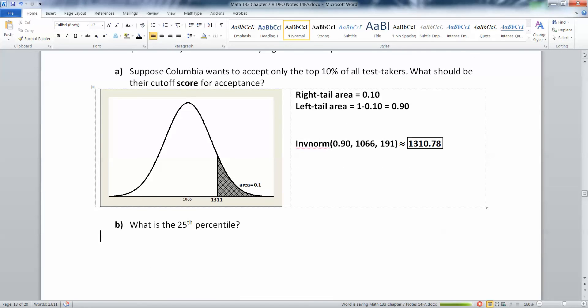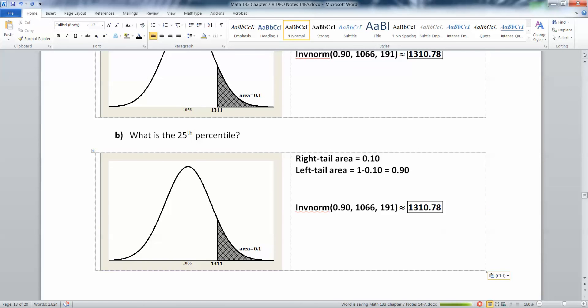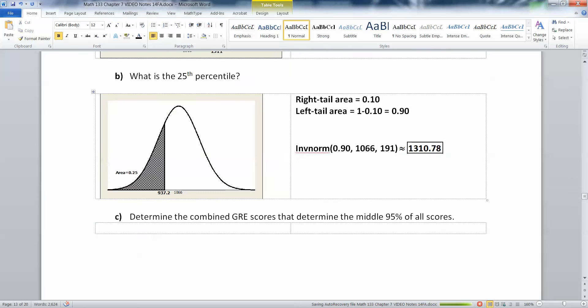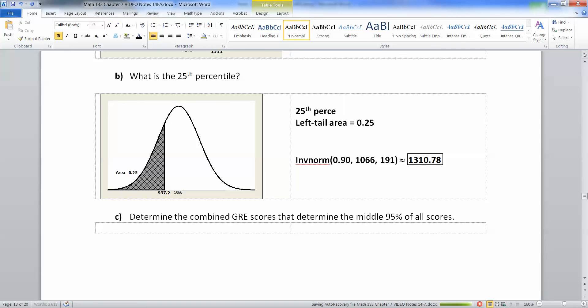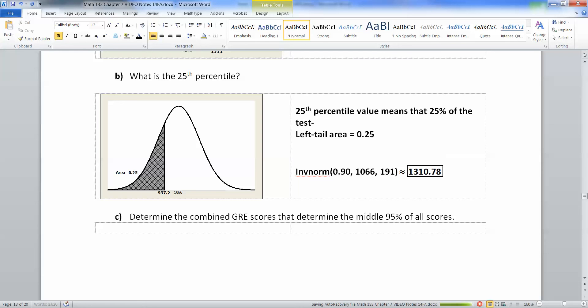All right. Now what about the 25th percentile? Well, if you score in the 25th percentile on this test, you're not doing so well. It means you're in the lower 25%. So let me draw you a picture of that. There we have the picture right there. So you can see this time, we actually don't have to do any weird calculation. We know the left tail area because of the definition of a percentile. Percentile, if you remember, is the percent that is less than or equal to your score. So 25th percentile value means that 25% of the test takers score less than or equal to that value.